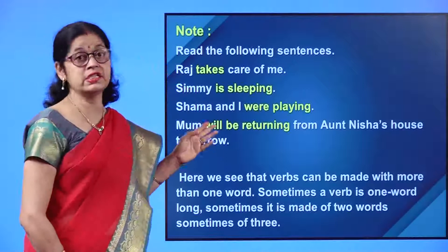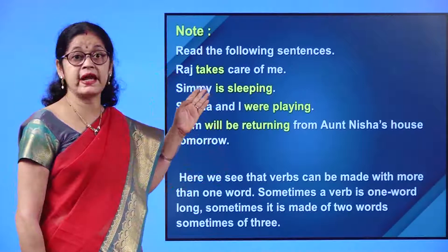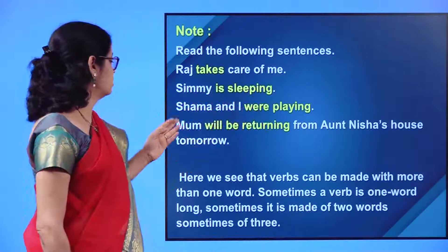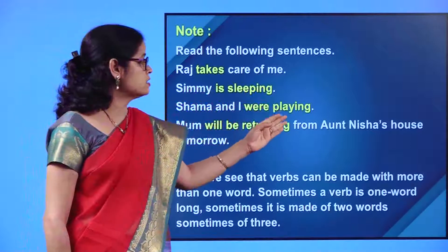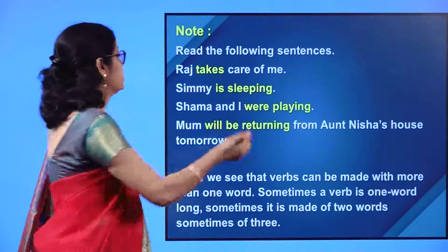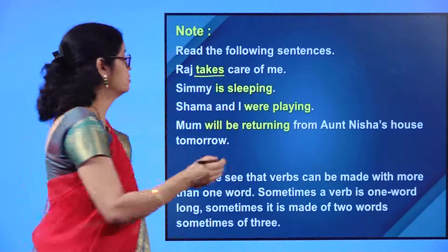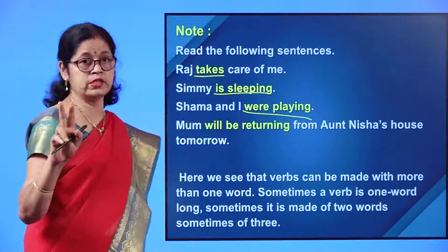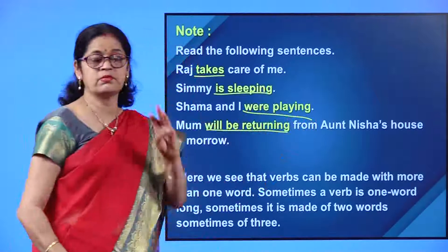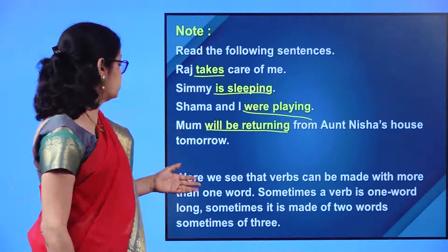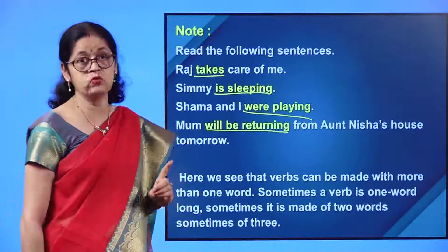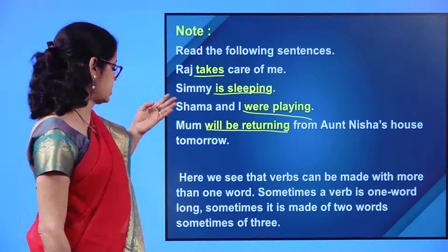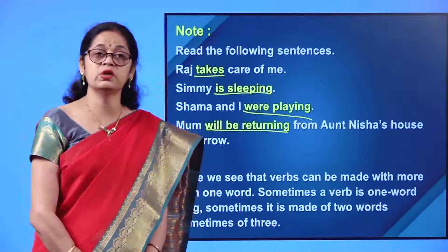Next, let us read these sentences also. Raj takes care of me. Simi is sleeping. Shama and I were playing. Mom will be returning from Aunt Nisha's house tomorrow. Here, 'takes' is a one-word verb. 'Is sleeping' is a two-word verb. 'Were playing' is again two words. 'Will be returning' is a three-word verb. So, verbs can be made with one word, two words, or three words. A verb doesn't have to be a single word.